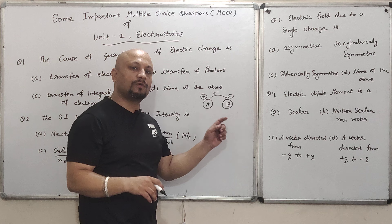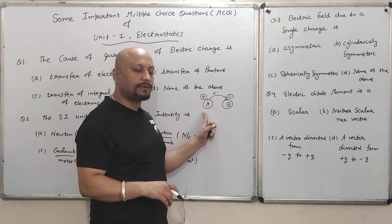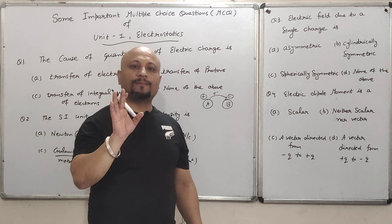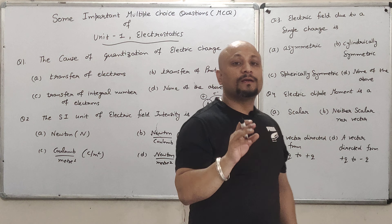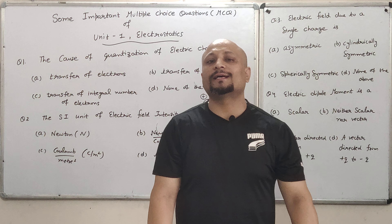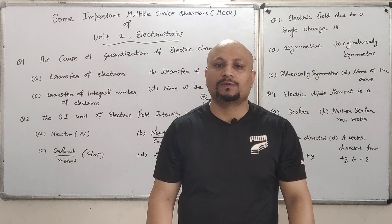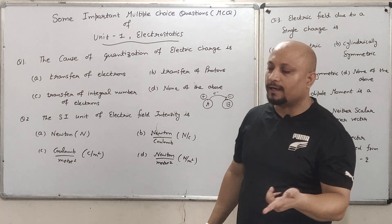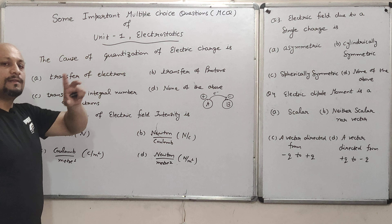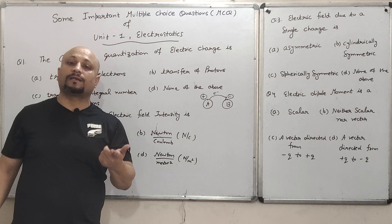Where the electron moves away, the body will acquire positive charge due to deficiency of electrons. Where the body gains electrons, it will acquire negative charge. The key point is quantization — charge is always in integral form. It never happens that 1/4 electron transfers or 2/5 electrons transfer. It will always transfer in integral form. So the answer — transfer of electrons alone is not right because we don't know how many are transferred. Transfer of protons also — we don't know how many.